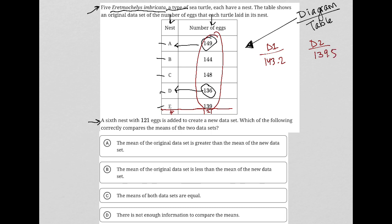So let's look at my answer choices. Choice A, the mean of the original data set is greater than the mean of the new data set. Yes, it is. It went from 143.2 to 139.5. Let's just check to see if there's anything else here that is worthwhile. Choice B, the mean of the original data set is less. Nope, it's not less. Choice C, they're equal. Choice D, there's not enough information. So yeah, A is definitely the best answer to this question.